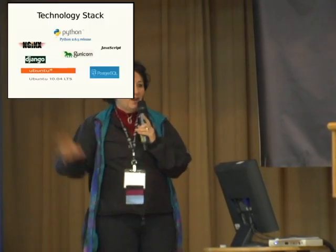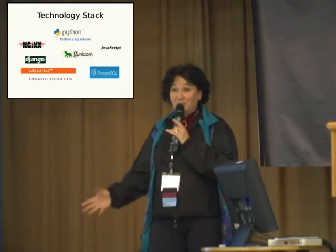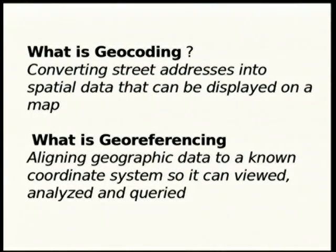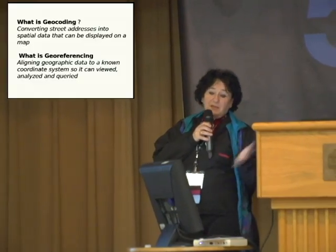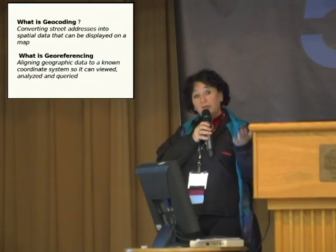Our stack is Django and Nginx and Ubuntu. Probably the most used Linux — being that I'm from Red Hat, I was a little sad to see they weren't using that, but it's still a Linux distro. So my talk today, and where I've been in the last six months, is playing around with geocoding associated with Python. Geocoding, to me, is really converting a street address into geospatial data so that you could display it on a map. And then georeferencing is this idea that you can use that data and display it, analyze it, or query it.